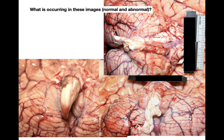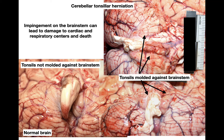Looking at these images: the bottom left shows essentially a normal brain where the cerebellar tonsils are not molded against the brainstem. In the other two views of the same individual, you can see the cerebellar tonsils are notched at the base and pushed up against the brainstem — they have herniated through the foramen magnum. This is the worst form of herniation because it can damage the cardiac and respiratory centers in the brainstem and lead to death.